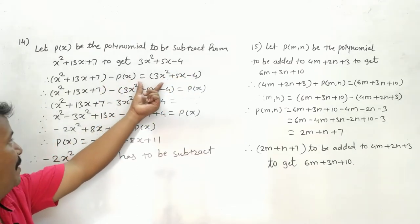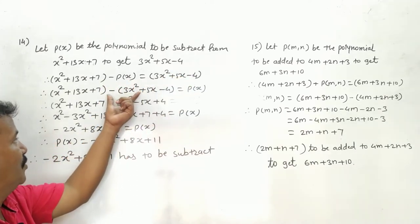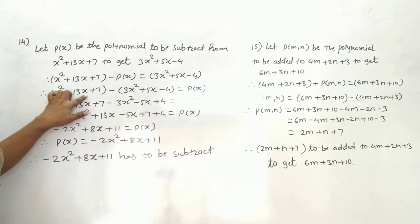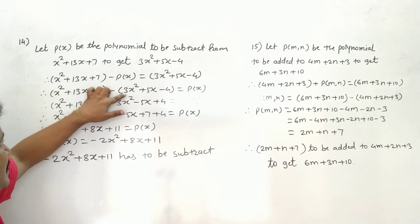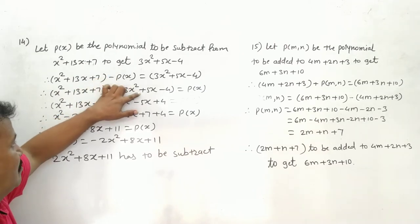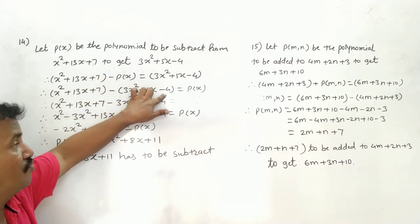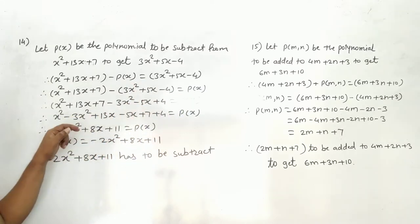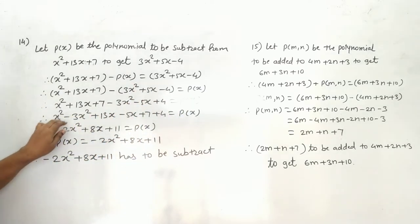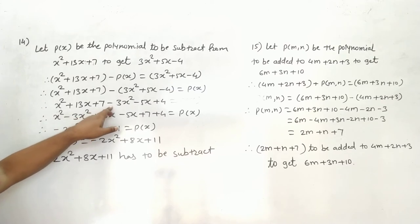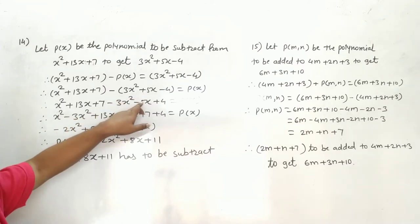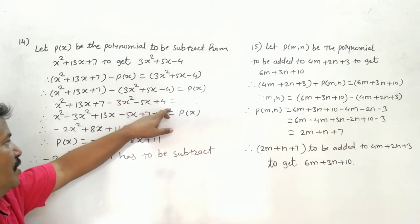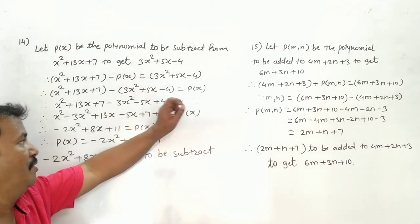Therefore, p(x) equals x² + 13x + 7 minus (3x² + 5x - 4). Now open the brackets: x² + 13x + 7 minus 3x² minus 5x plus 4 is equal to p(x).